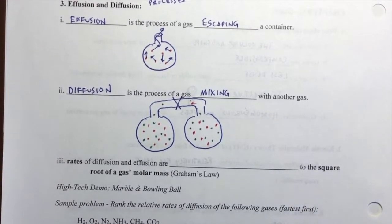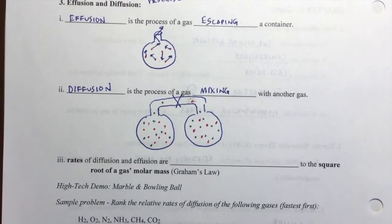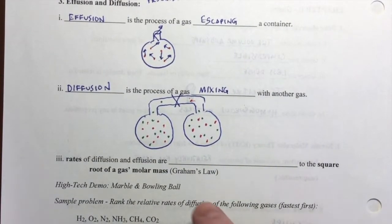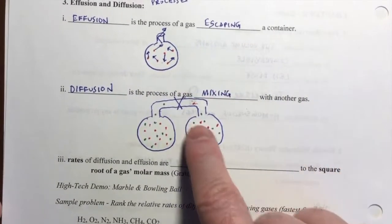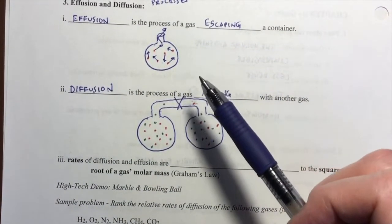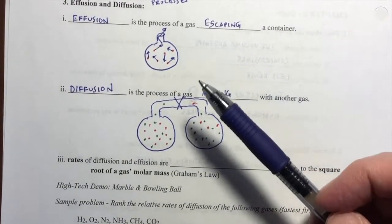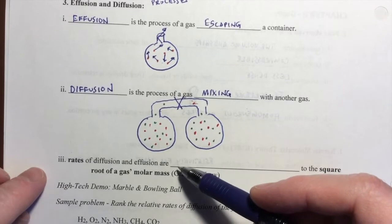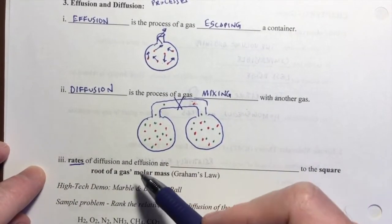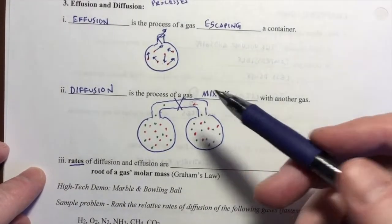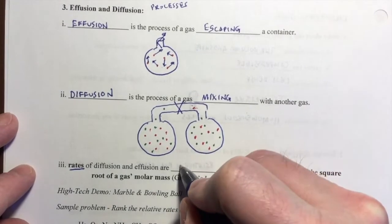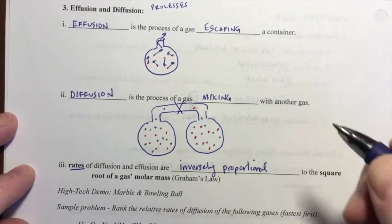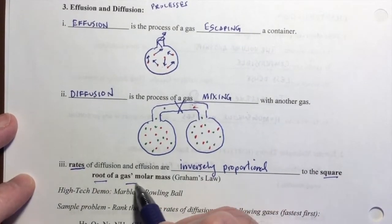Those are a couple of processes. It's good to know what those are. Be familiar with them. Now, we could do some mathematical treatment on these gases, depending on what the gases are. We could decide how fast they're going to effuse or diffuse, how fast they're going to effuse from a container, or how fast they will diffuse with each other. But for this simple model, I just want us to be familiar with the general trend. The general trend is that the rates, the speed at which diffusion and effusion occur, are inversely proportional to the square root of the gas's molar mass.